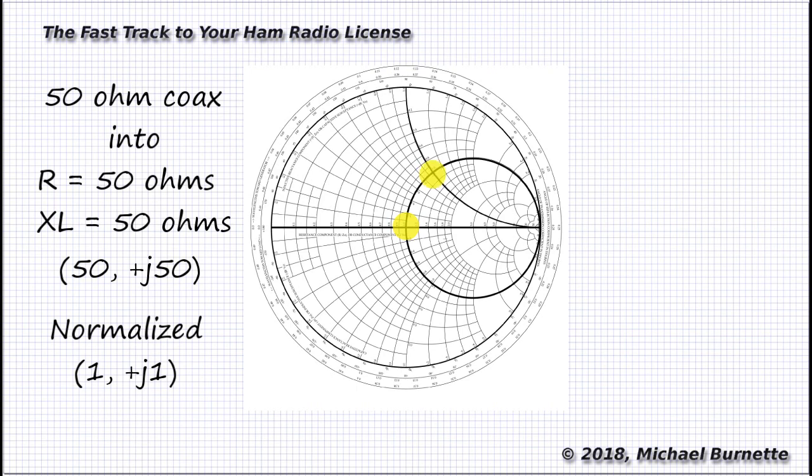Then, we set the pencil part of the compass on the impedance point, and we draw a circle. What we have added is called a standing wave ratio circle. We read the SWR on the resistance scale, and we read it on the right-hand half to the right of 1.0, because there's no such thing as an SWR of less than 1 to 1. I read it as 2.6 to 1.